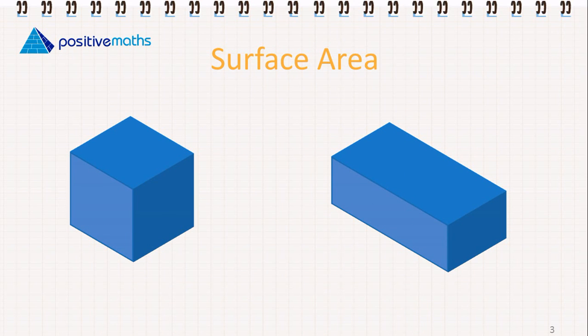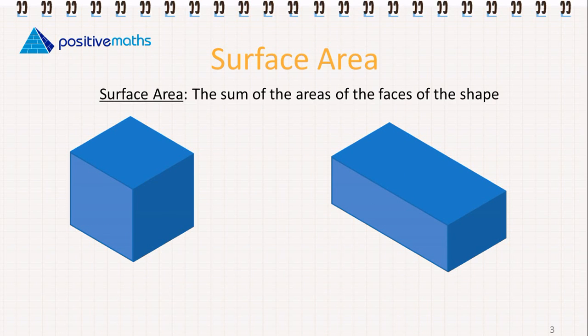And then the surface area. The surface area is the sum of the areas of the faces of the shape. We're used to finding area of 2D shapes where we have a length and a width, but we have 3 dimensions here. So that means we need to find the area of all of the faces of the shape.